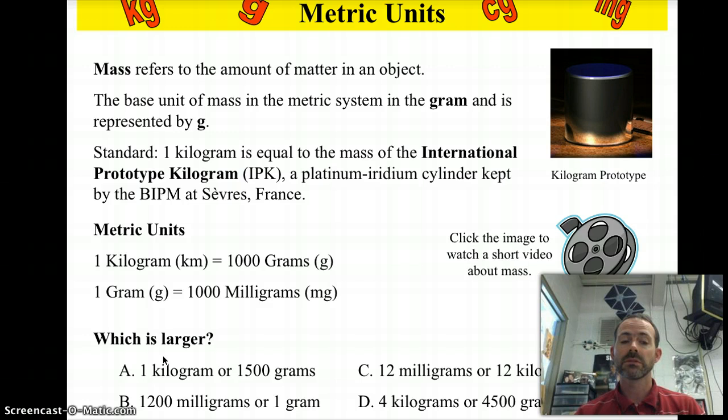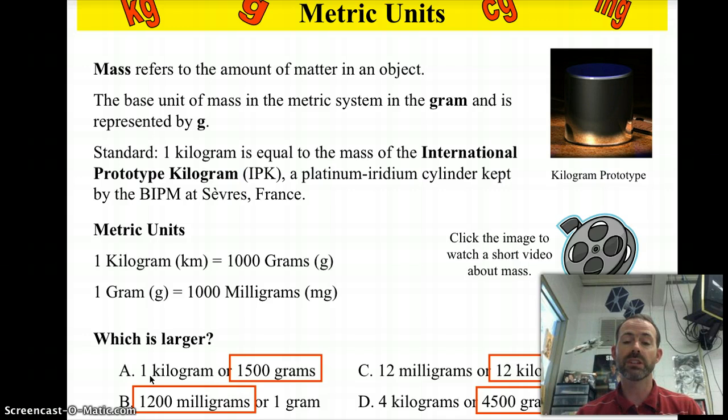Ready? So a kilogram is smaller than 1500 grams. Remember a kilogram is a thousand grams, so 1500 is bigger. For B, 1200 milligrams is larger. One gram is a thousand milligrams so 1200 is larger. For C, 12 milligrams or 12 kilograms, that should be easy. Kilo is bigger than milli, so 12 kilograms. And then D, four kilograms or 4500 grams. Remember one kilogram is a thousand grams, so 4500 is larger. Got it? Go back and review if you need some more help.